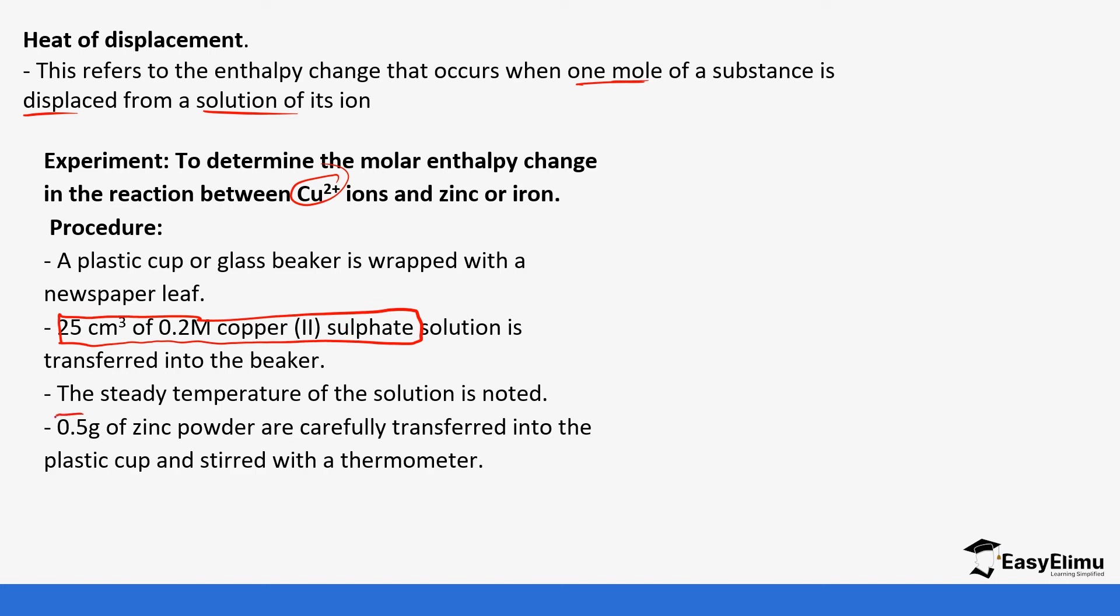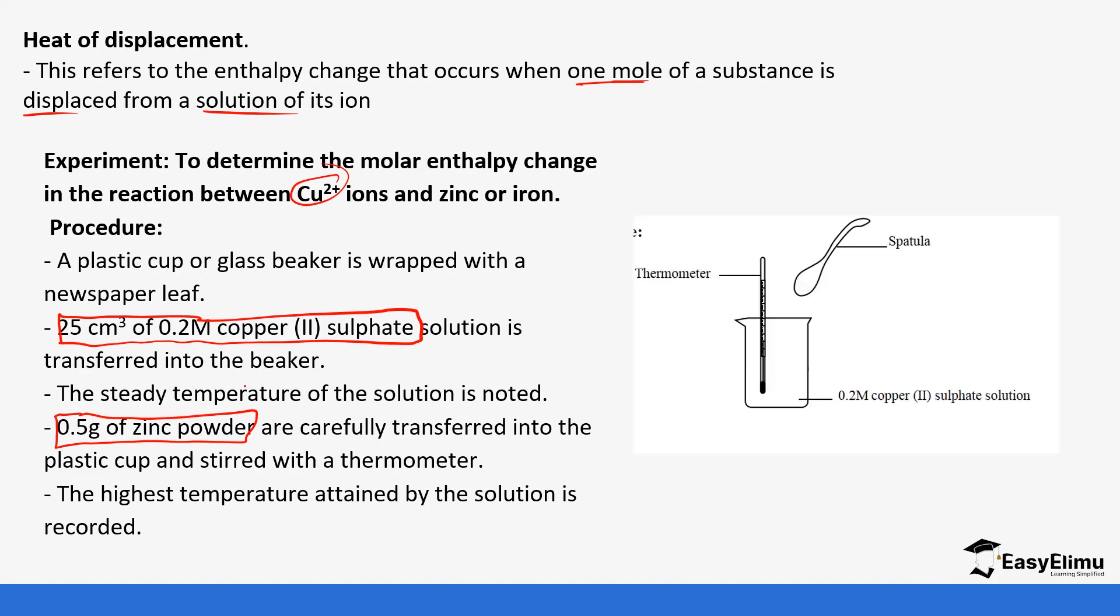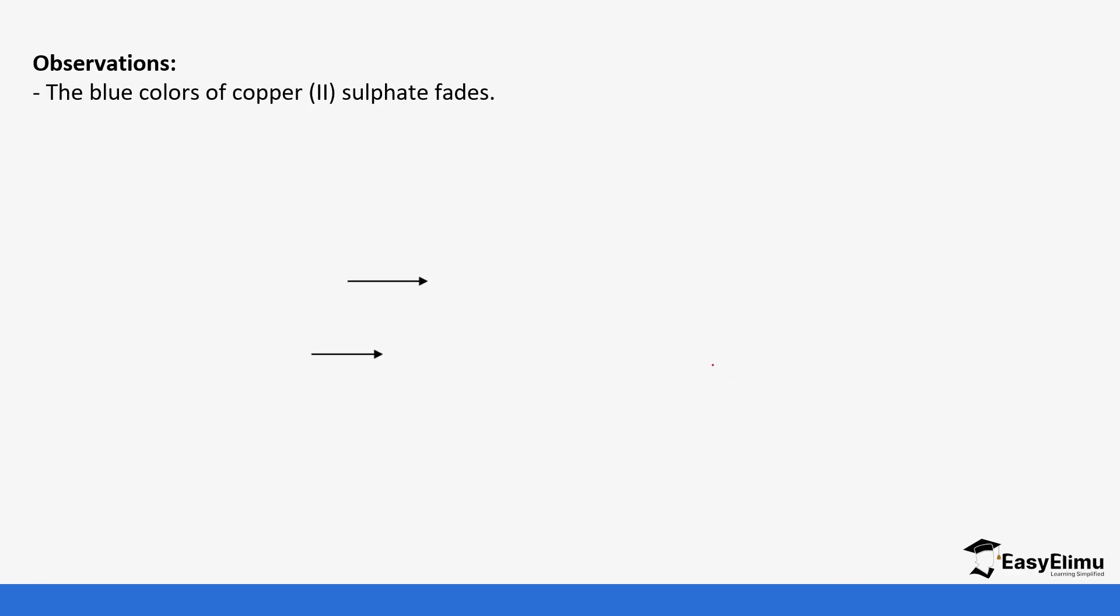And then we add 0.5 grams of zinc powder, is transferred into the plastic cup and stirred with a thermometer. So the highest temperature is obtained by the solution and is recorded. So this is the setup. We measure the temperature and the change. So some of the things you notice in this reaction is that the blue copper sulfate is going to fade and then you're also going to see some brown deposits.